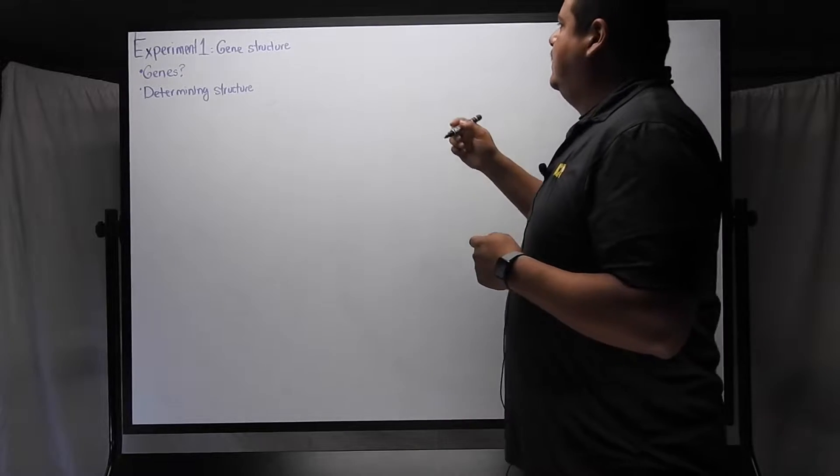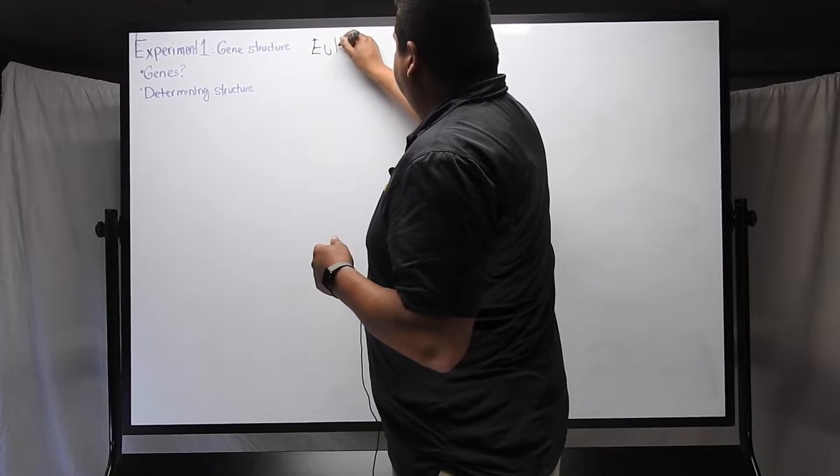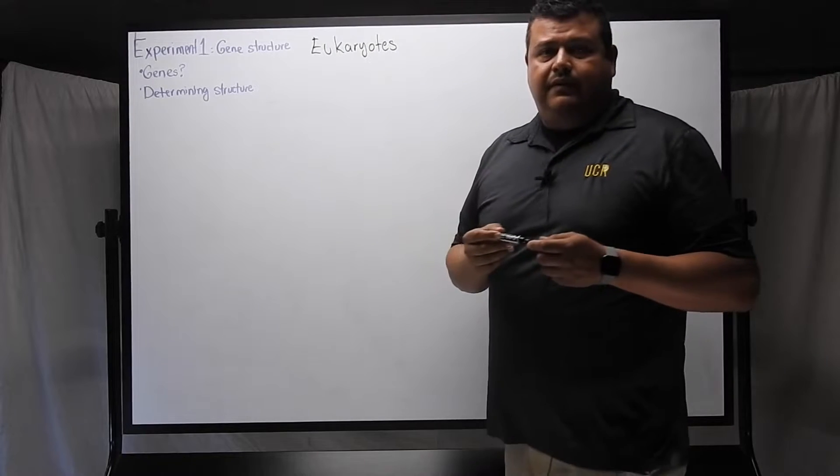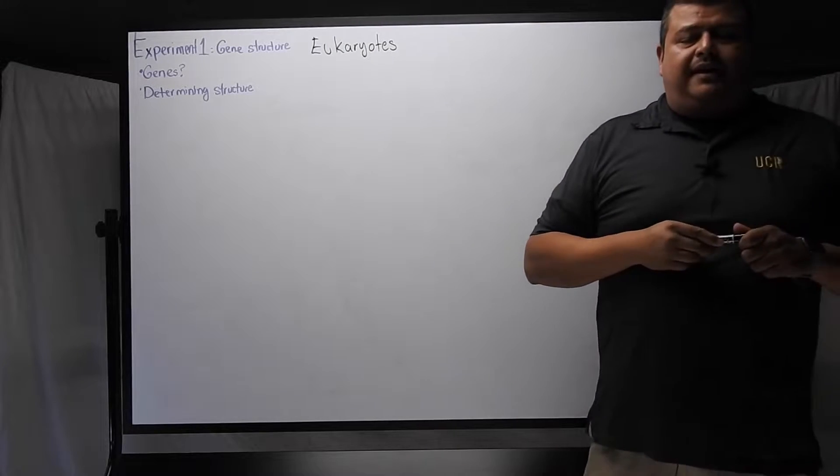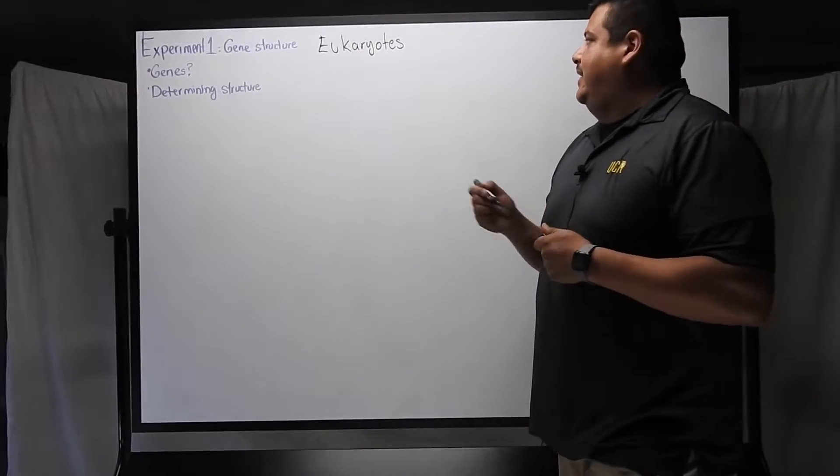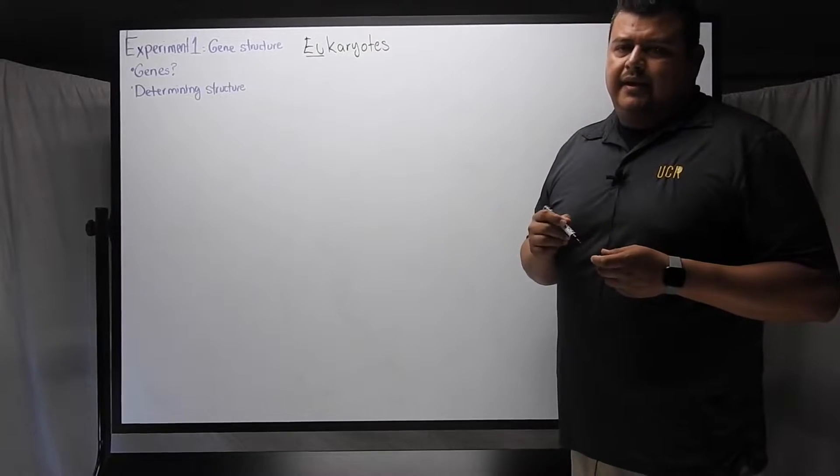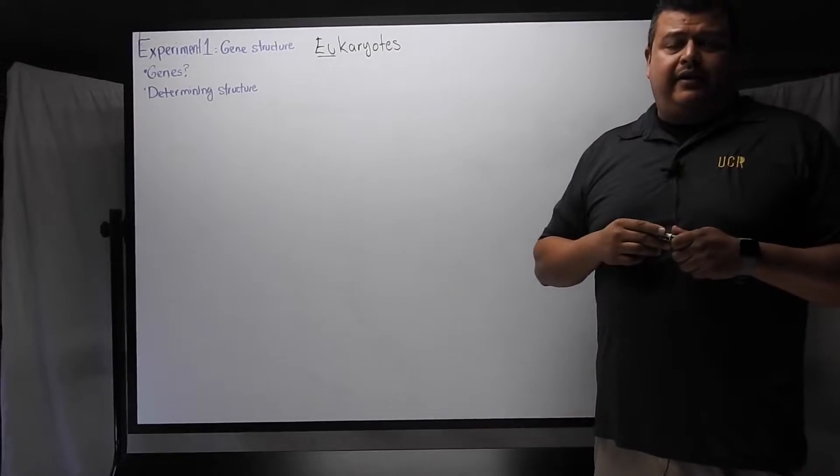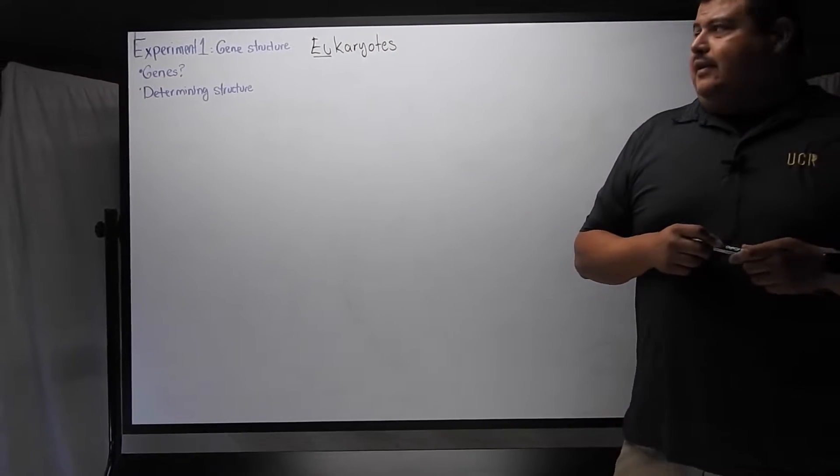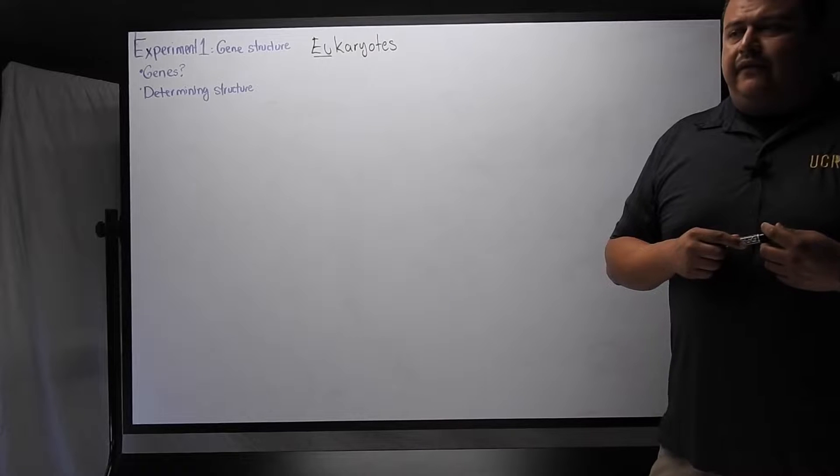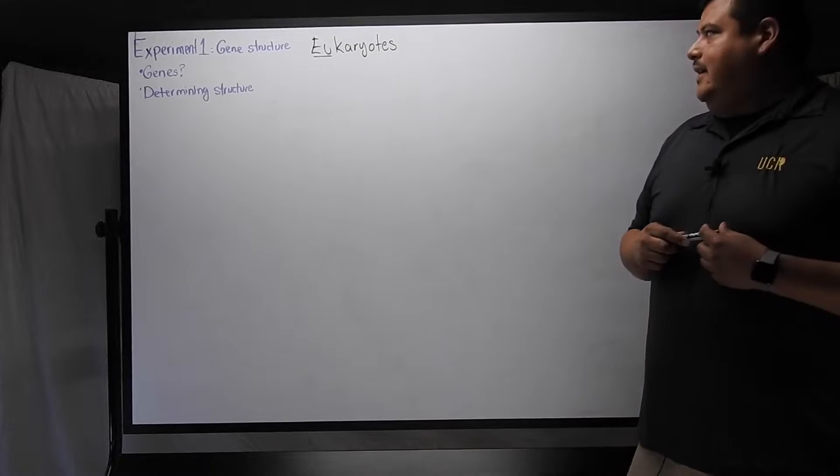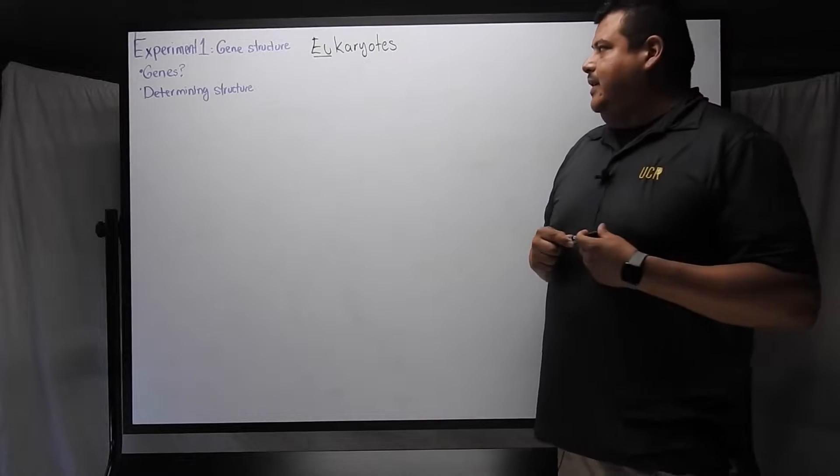So what are genes? In eukaryotic organisms, eukaryotes are organisms like animals, plants, and fungi, things that have a true nucleus. It comes from the word karyon or kernel. Things that have a true nucleus, the genome is organized in a different way than in prokaryotes, which are things like bacteria.